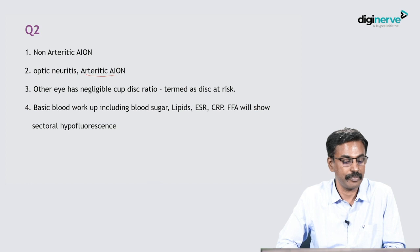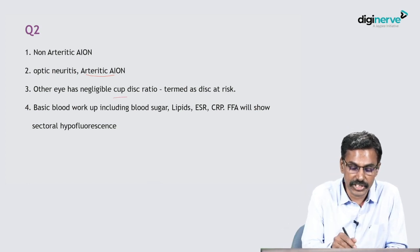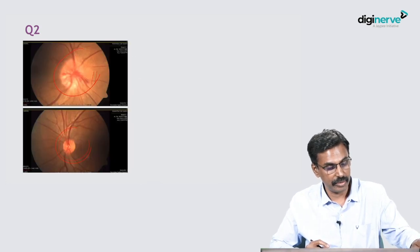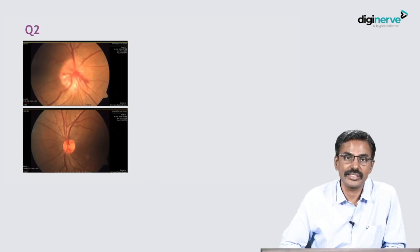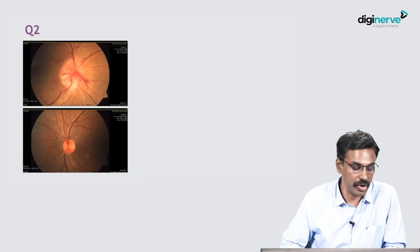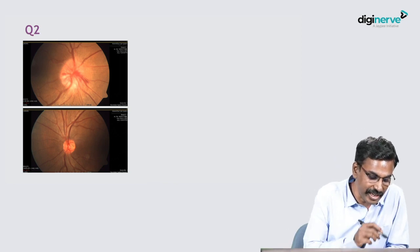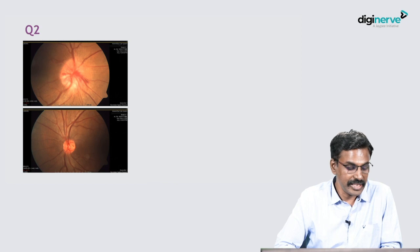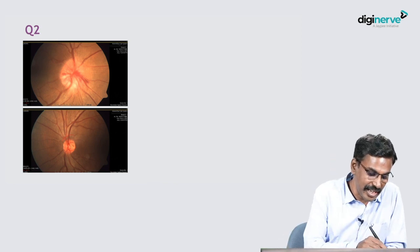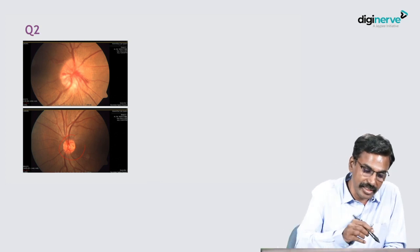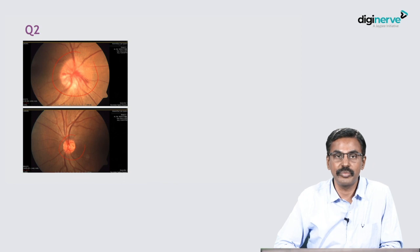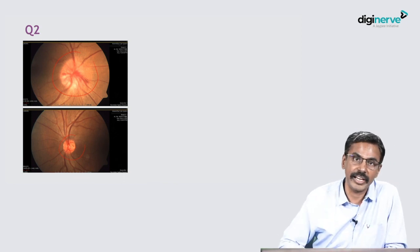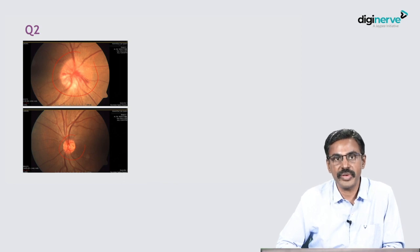What is the relevance of the other normal eye? The other eye has a negligible cup-disc ratio, termed a disc at risk. Going back to the previous slide, this cup-disc ratio is very small. A small cup-disc ratio means there is a small tight scleral canal, meaning the million axons of the optic nerve are packed into this small canal and are prone for a compartment syndrome-like picture. These discs are called disc at risk. If the fellow eye has a small cup-disc ratio, the affected eye would have the same, and so this eye has non-arteritic ischemic optic neuropathy due to ischemia from compartment syndrome.